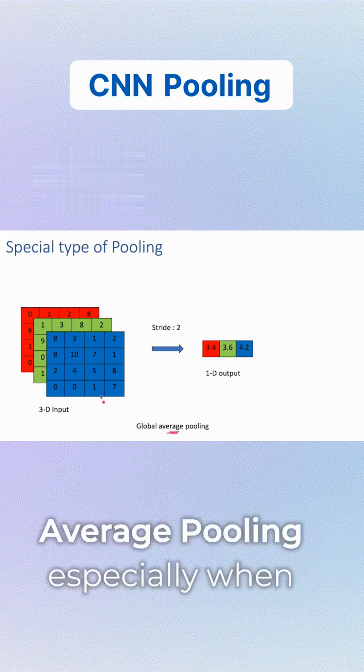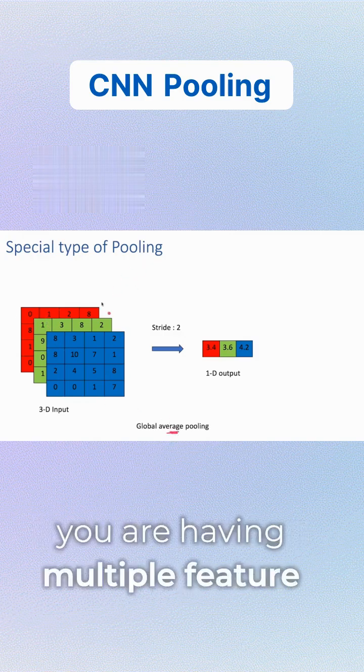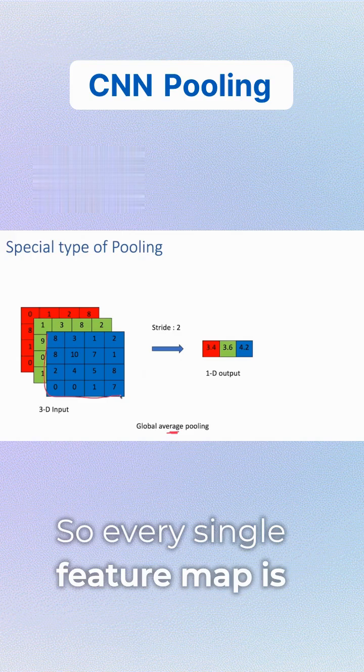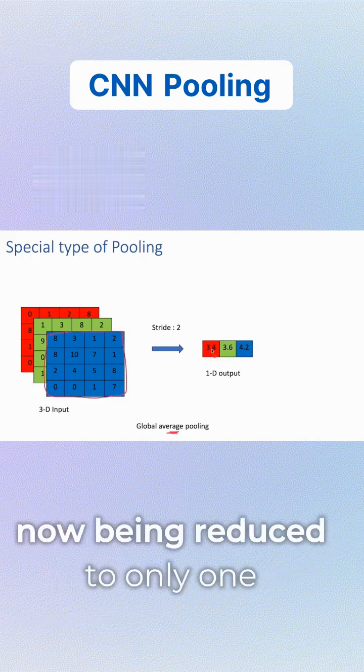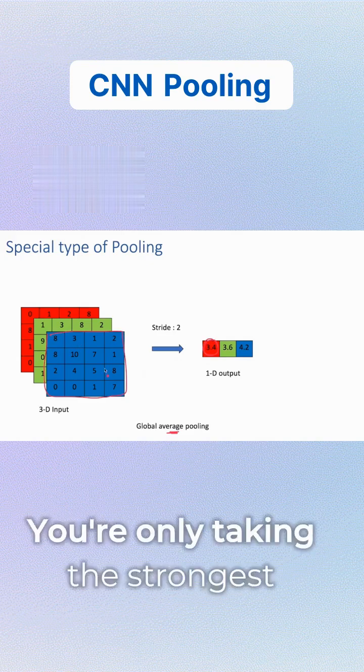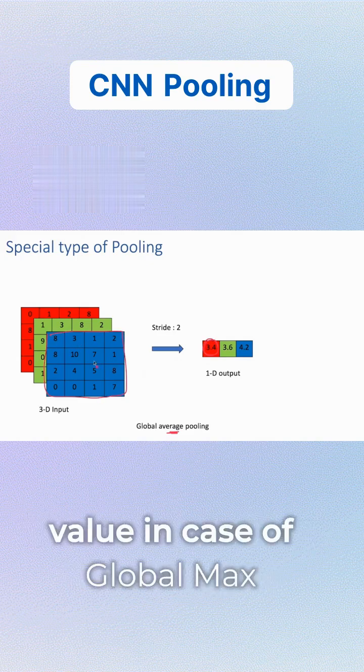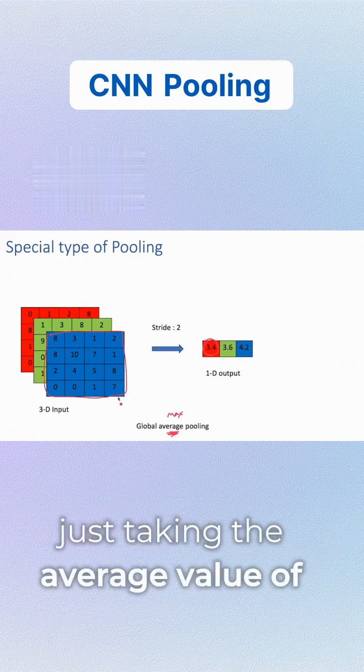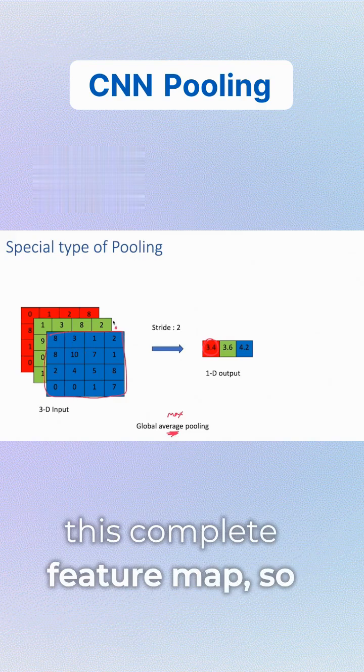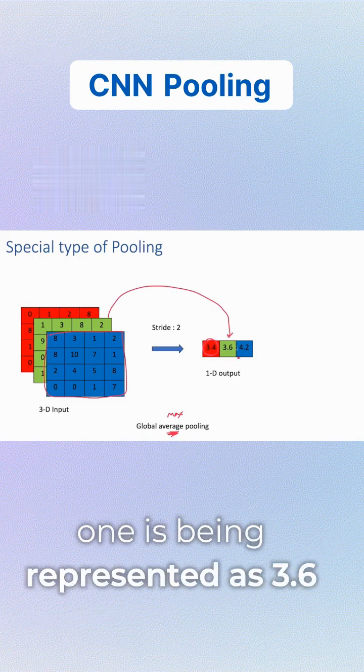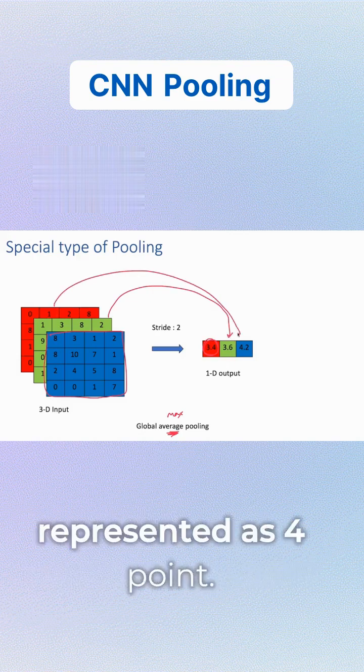With global average pooling, especially when you have multiple feature maps, every single feature map is reduced to only one single value in your output. In global max pooling, you take only the strongest value. In global average pooling, you take the average value of the complete feature map. For example, the average value of one feature map is 3.6 and another is 4.